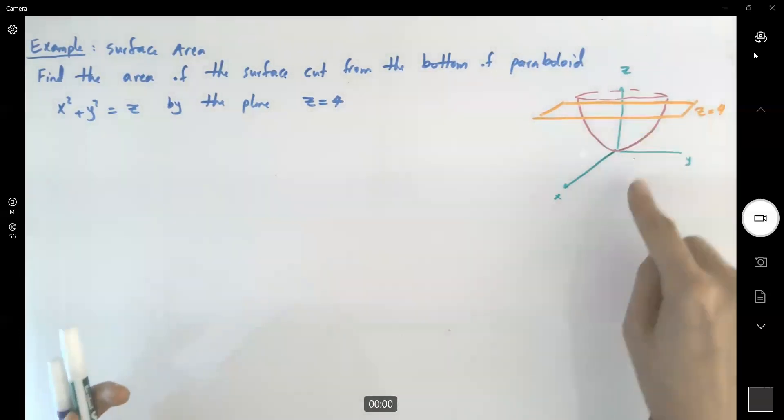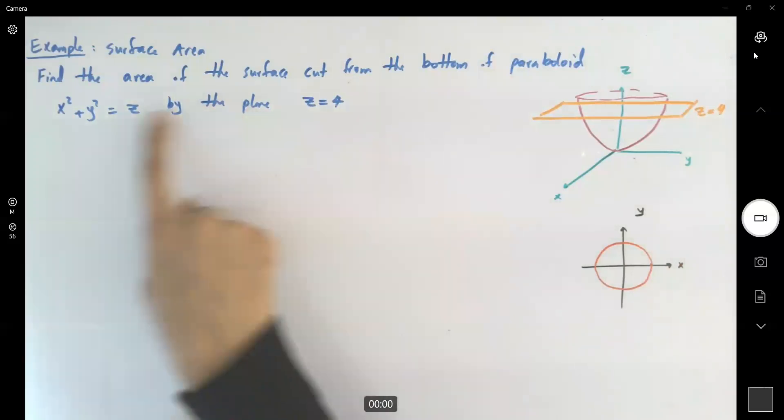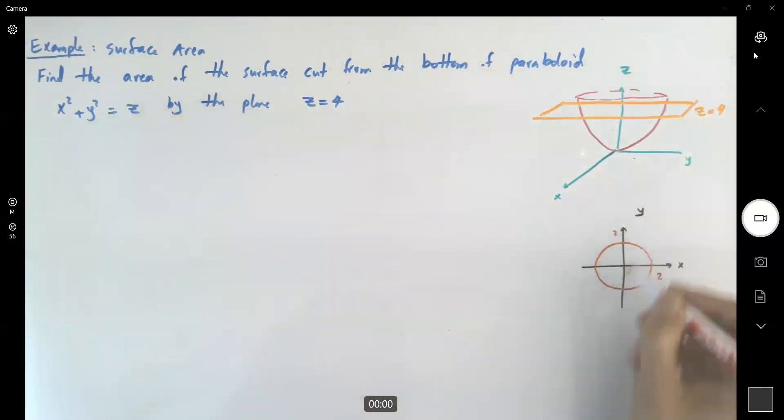The projection, the shadow in the x-y plane, is going to be just a disk. If you plug in z here, you have the radius equals 2, and theta ranges between 0 to 2π. So let's just go back to the example.